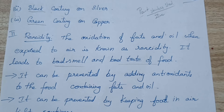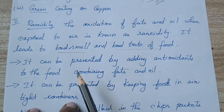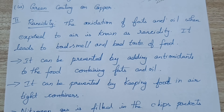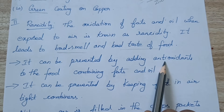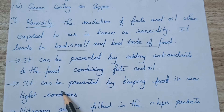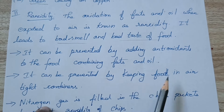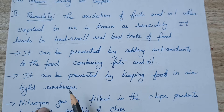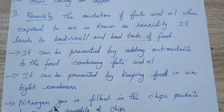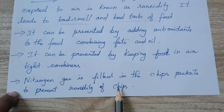So how can it be avoided? The oxidation of oil and fats can be prevented. It can be prevented by adding antioxidants to food containing fats and oil. If you add antioxidant, it prevents the oxidation process. It can also be prevented by keeping food in airtight containers.